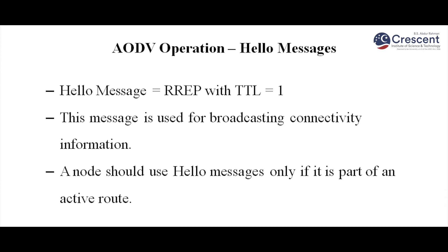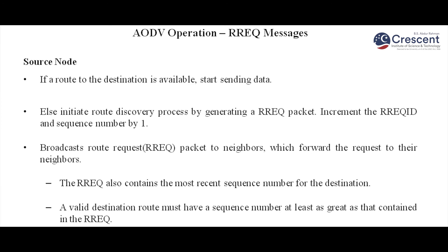A node should use hello messages only if it is part of an active route. Those who give a reply are updated in the source's table. If a route to the destination is not available, the route discovery process is initiated by generating a route request packet, which is broadcast to all neighboring nodes. In this diagram, the neighboring nodes are B, C, and D.